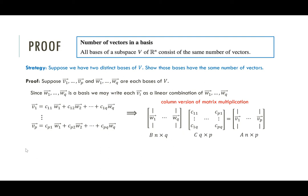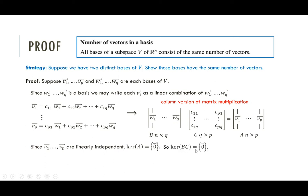Here's our next step. Since V1 to VP are a basis, they're linearly independent. If they're linearly independent, then the kernel of the matrix A — which has these vectors as columns — equals zero. So the kernel of A is zero. But notice that A equals BC, so the kernel of BC equals zero.